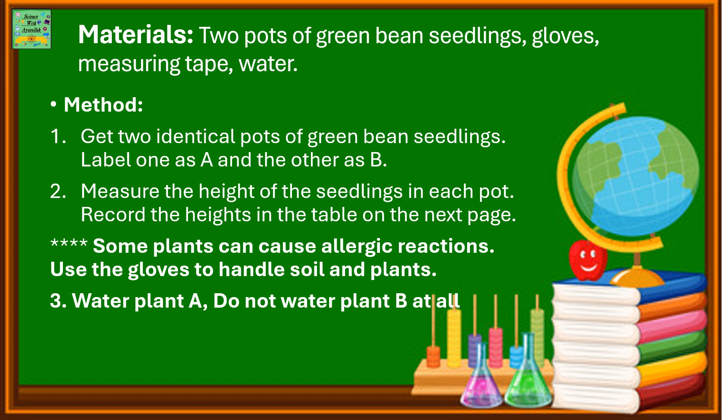Method. First, get 2 identical pots of green bean seedlings. Label one as A and the other as B. Measure the height of the seedlings in each pot and record the heights in the table on the next page. Some plants can cause allergic reactions, so you must wear gloves to handle soil and the plants. Now water plant A and do not water plant B at all.